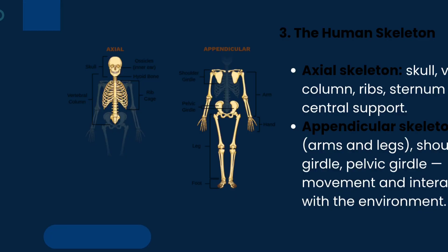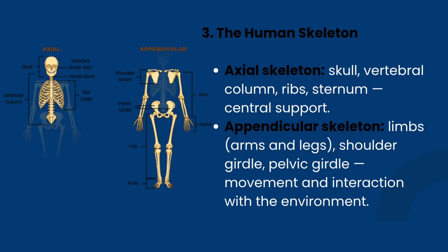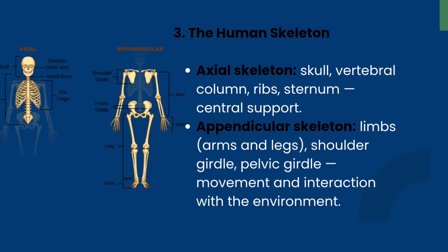The human skeleton is divided into two parts: the axial skeleton and the appendicular skeleton. The axial skeleton includes the skull, vertebral column, ribs, and sternum — its main function is central support. The appendicular skeleton includes the limbs, shoulder girdle, and pelvic girdle — its main function is movement and interaction with the environment.